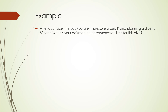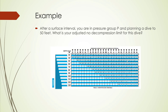The whole idea is to consider the residual nitrogen carried over from the previous dive as part of the current dive, so you stay within the safe limits for no decompression diving. Let's review one more example. After a surface interval, you are in pressure group P and planning a dive to 50 feet. What is your adjusted no decompression limit? Looking at Table 3, find pressure group P along the top row and 50 feet along the left side. The intersection shows 50 on top and 30 on the bottom. Therefore, the adjusted no decompression limit is 30 minutes.